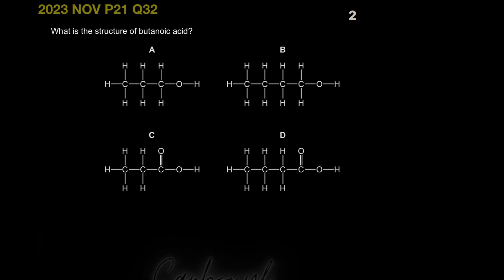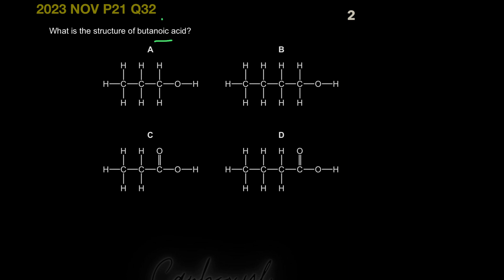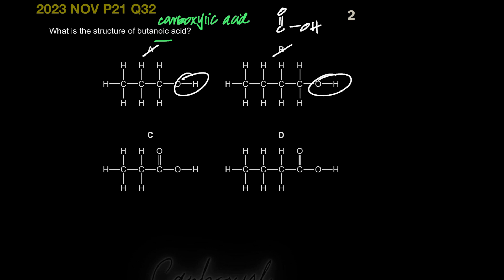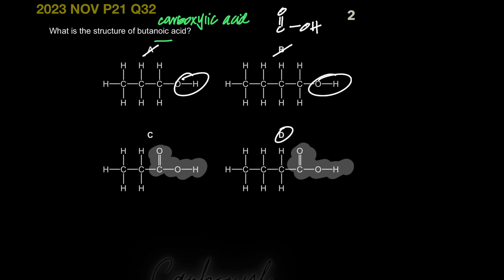Next MCQ: what is the structure of butanoic acid? Butanoic acid is a carboxylic acid with four carbons. Every carboxylic acid has the functional group C-O-O-H — the carbonyl carbon bonded to OH, which is the carboxyl group. Options A and B show only an OH group, so they're alcohols. Both C and D have the carboxyl group, but 'but' means four carbons. C has only three carbons — that's propanoic acid — so D is the correct option.